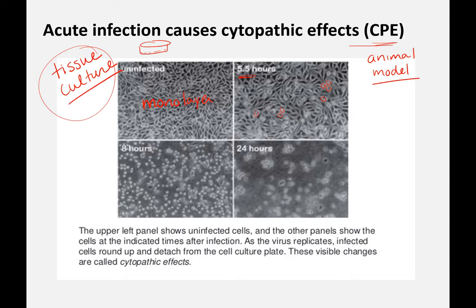This rounding is called the cytopathic effect. After eight hours you see lots of rounding, and after 24 hours you're seeing some clumping but also empty space, which means cells have died most likely through apoptosis. Our cells don't grow this way in our body — yes, we have nice layers of skin cells and other cell types, but this is pretty artificial. With an animal model, you can't look at a virus infection in real time; you have to sacrifice the animal, harvest the tissue, slice it, stain it, and look at it under the microscope.